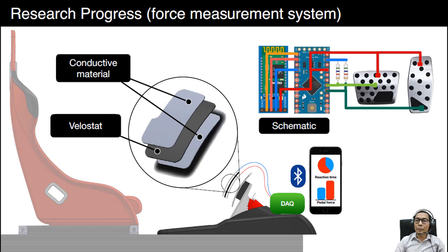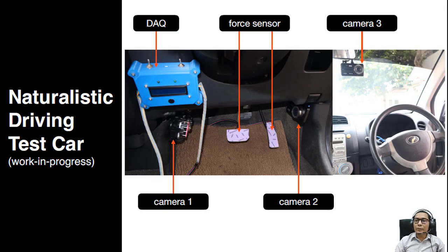Therefore, this system will measure the force applied on the brake pedal and the time taken for late response from emergency-induced to press the brake pedal. This is the instrumented car equipped with the force measurement system and the video cameras for the naturalistic driving. We are currently finalizing the setup of this instrumented car and will perform several tasks to measure the reliability of the whole system. We hope to run a pilot study in a month's time once this instrumented car is ready.